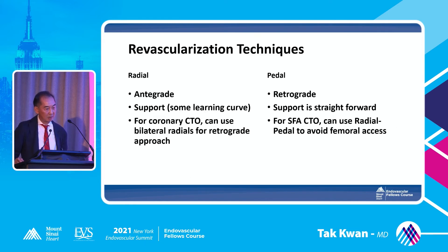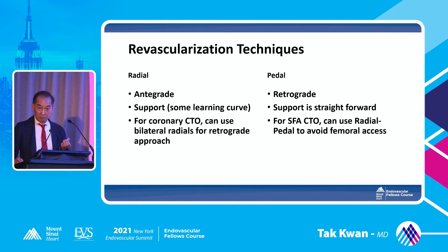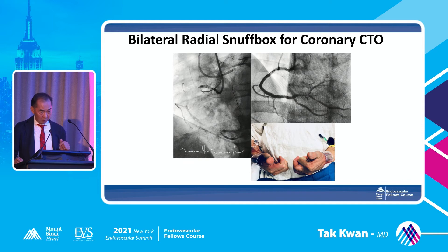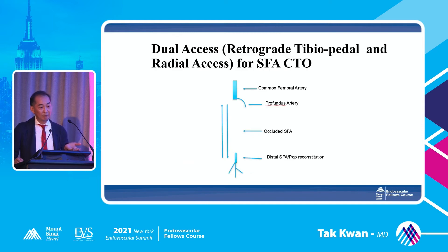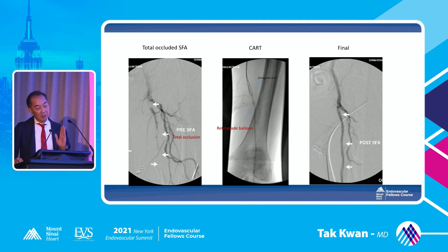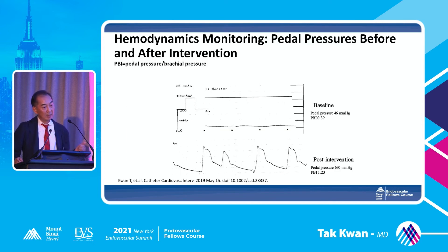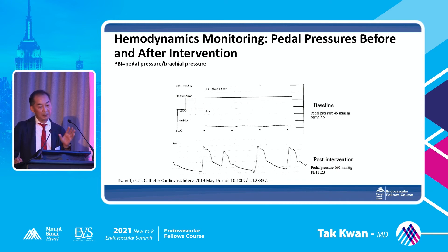For revascularization: with radial you do antegrade, of course. For pedal, it's all retrograde. For CTO, with radial you use bilateral radial; with pedal, you do radial and pedal, and you can avoid all femoral access — similar to coronary CTO technique. From radial down and pedal up with balloon, you can do that combination effectively. Additionally, with pedal access you can measure pressure from the pedal sheath to assess success — you monitor pressure, see a good waveform and good pressure, confirming revascularization success.